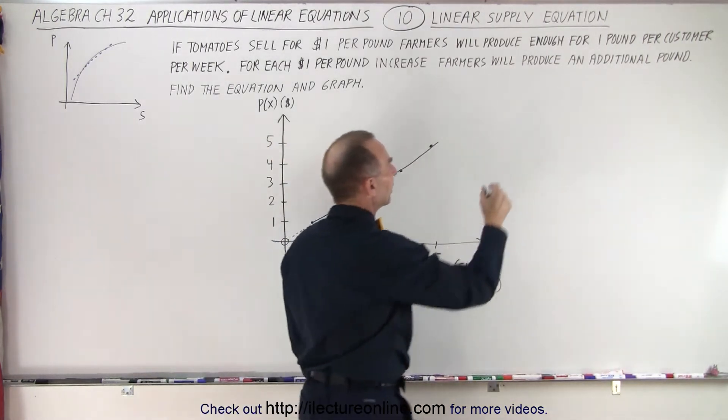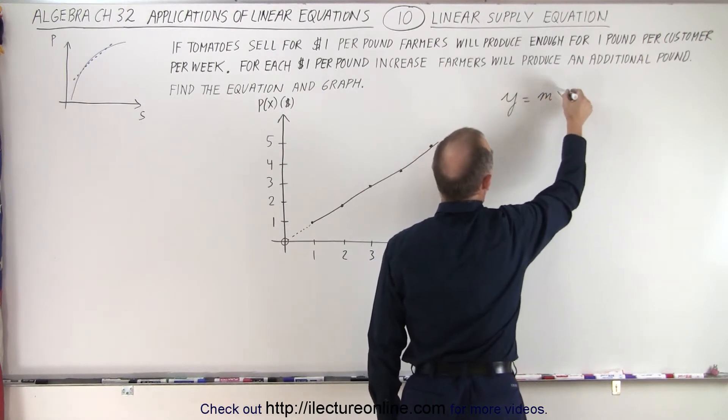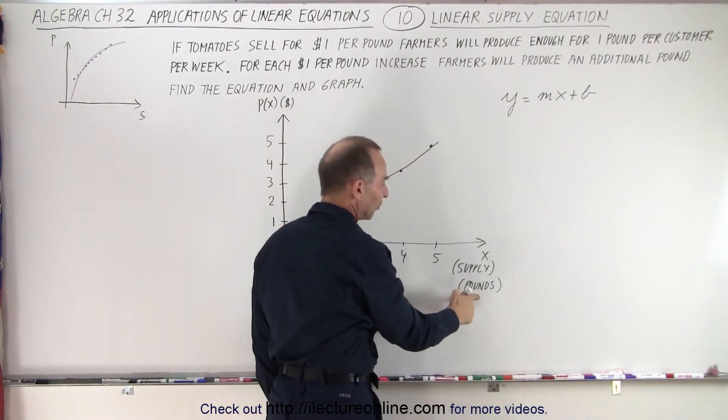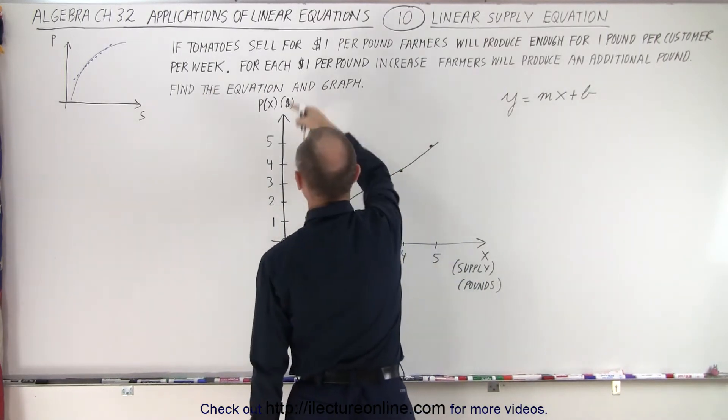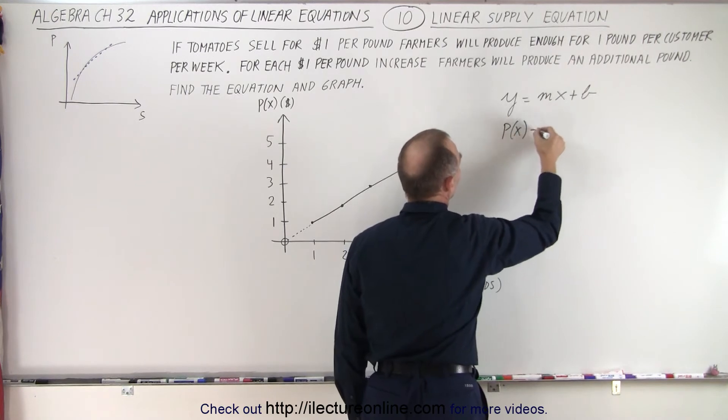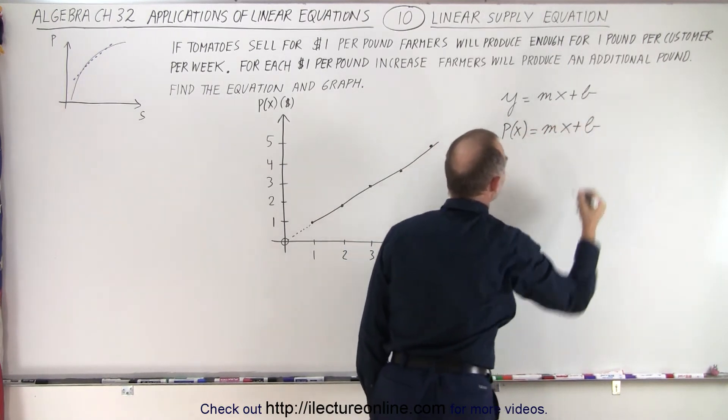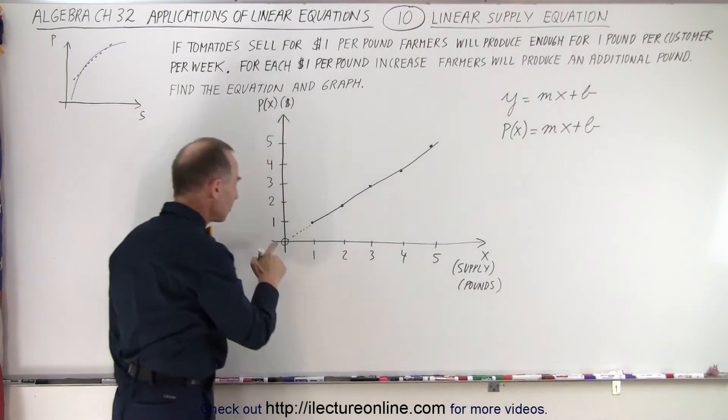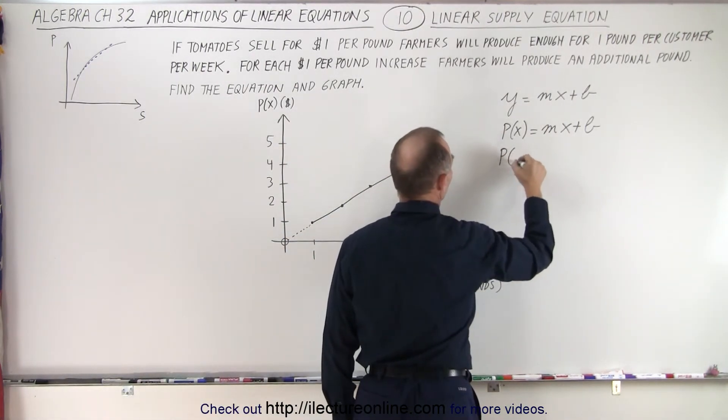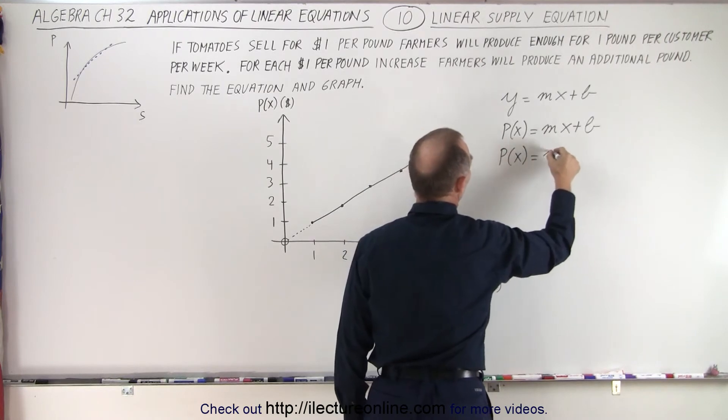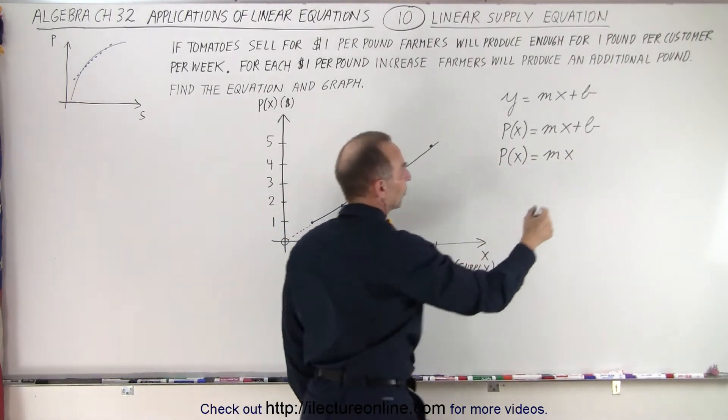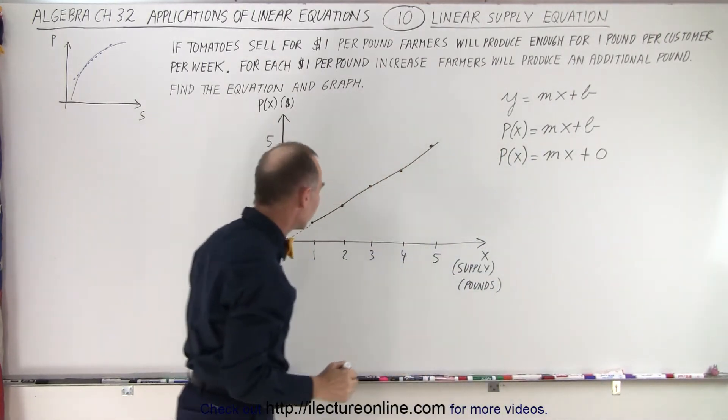And so if we want to find the equation, we have y equals mx plus b, x representing the number of pounds being supplied, and y representing the price. So we can see that price as a function of x is equal to the slope times x plus b. Now in this case, we can see that b is equal to zero. So that drops out. So we have p as a function of x is equal to the slope m times x plus zero. So you can see that b was replaced by zero.